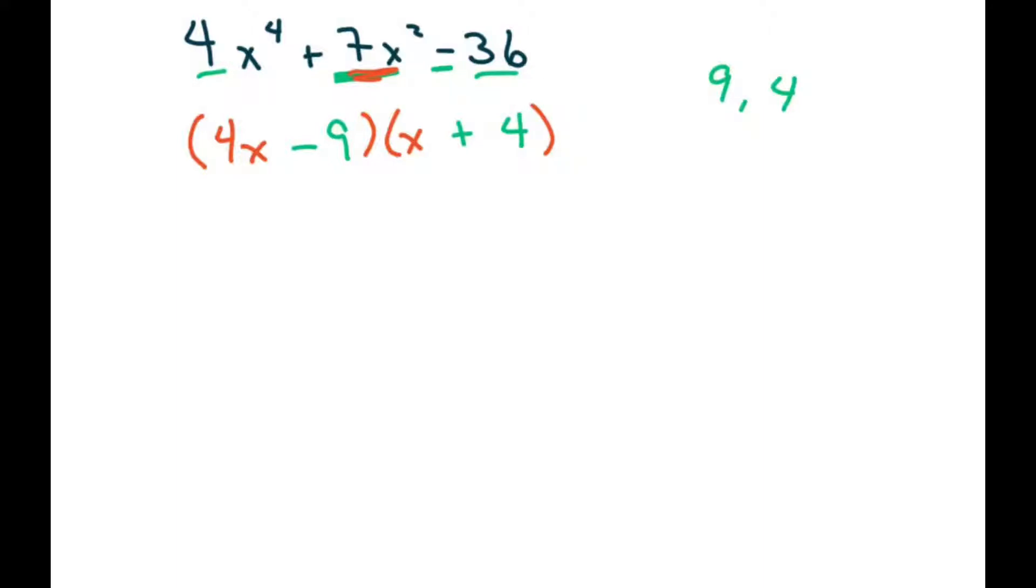this is where you want to be able to do this very quickly, mentally. So you want to mentally be able to see that's a 16x minus 9x, and that gives you your 7x. So our final answer would be 4x minus 9 times x plus 4, because that equals 7x.